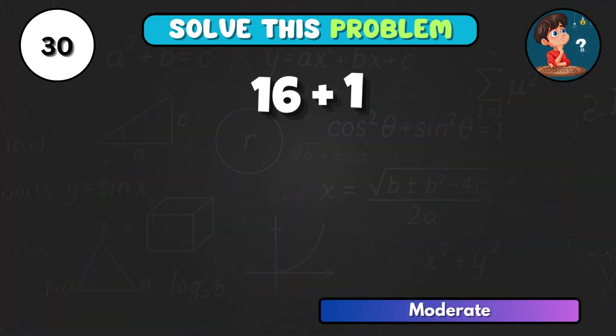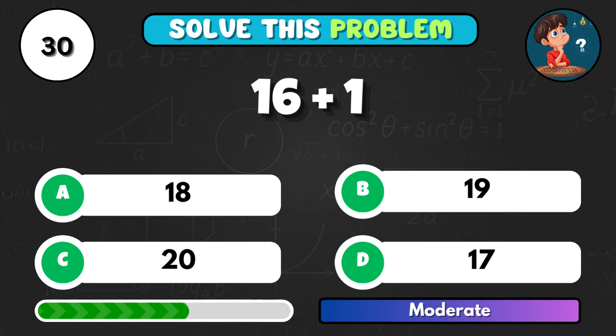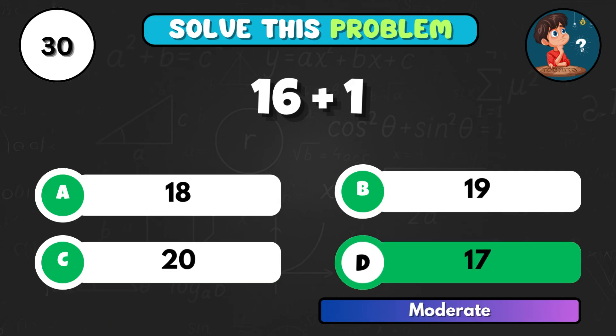16 plus 1, what's next in line? Option D equals 17.